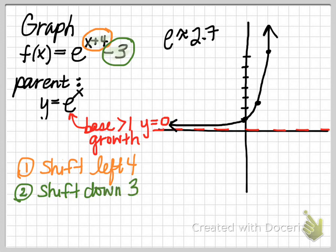So I like to move the asymptote first. Our asymptote used to be the horizontal line y equals 0, but it is going to now be shifted down 3. So we have a new horizontal asymptote. So our horizontal asymptote is the horizontal line y equals negative 3, now that we've shifted down 3.